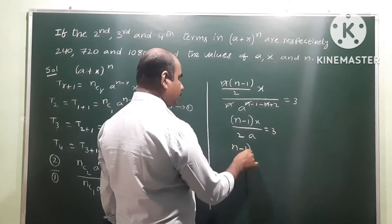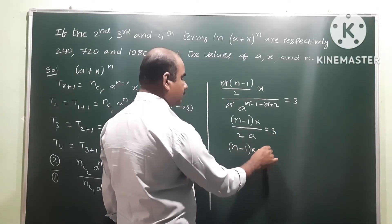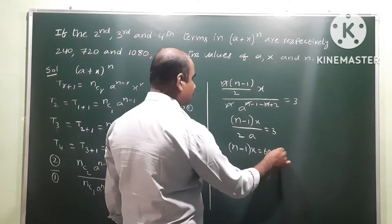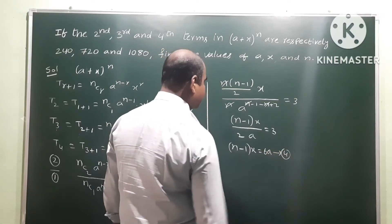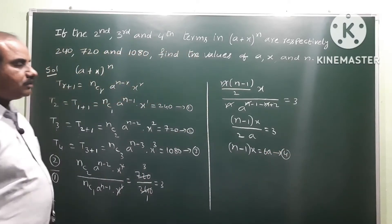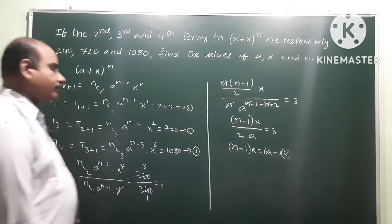Finally we get: (n−1) · x / 2 = 3. Let this be equation number 4.